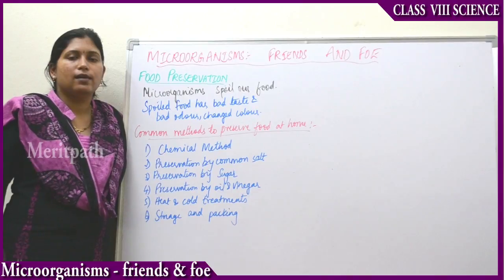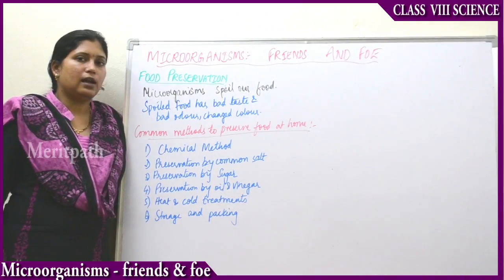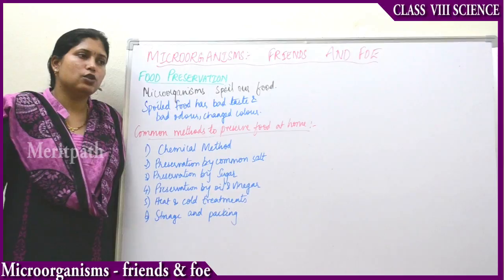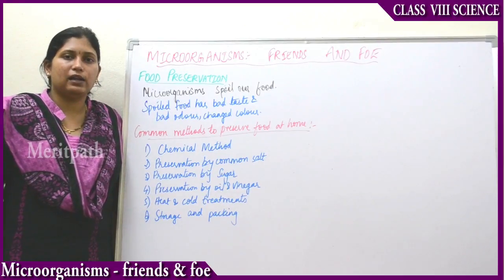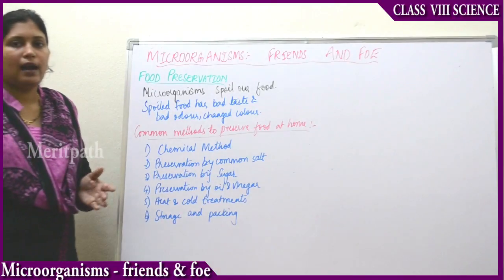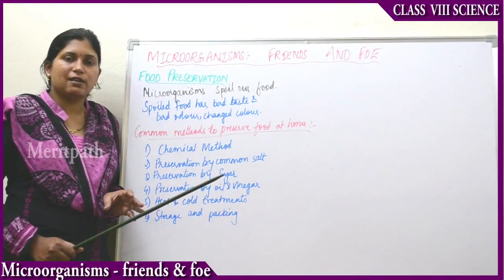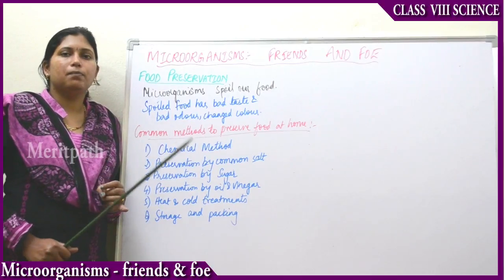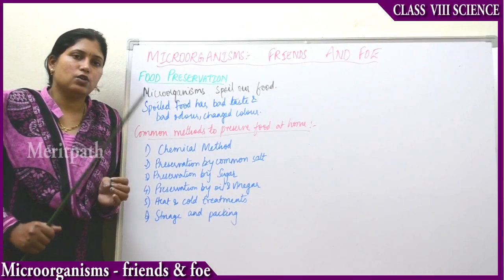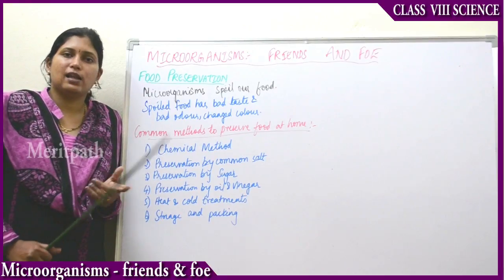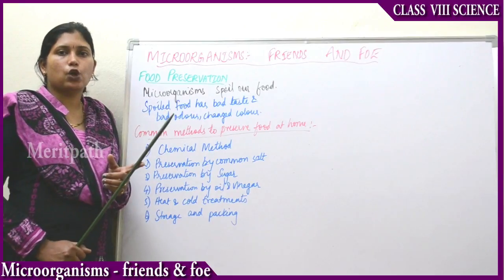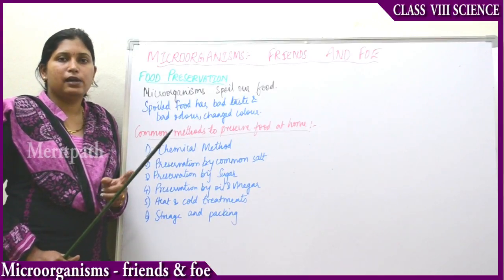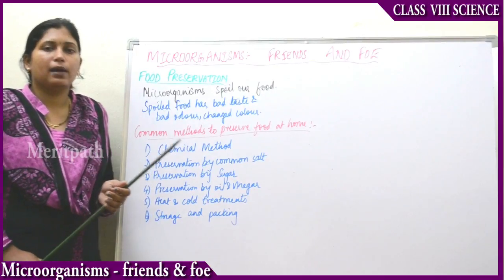Next is preservation by common salt. The common salt we use at home is used to preserve many things. It is applied on meat and fish and sun-dried sometimes. This salt inhibits the development of bacteria on the food. Sun-dried wheat, sun-dried fish, sun-dried prawns — all these are available in the market preserved with the help of salt. Also, mango slices and amla or gooseberry slices are sun-dried with salt and stored.